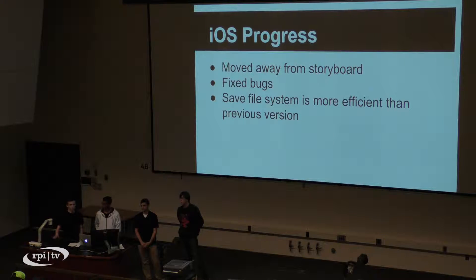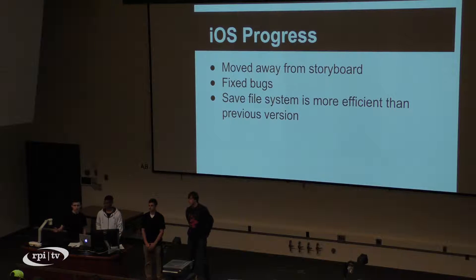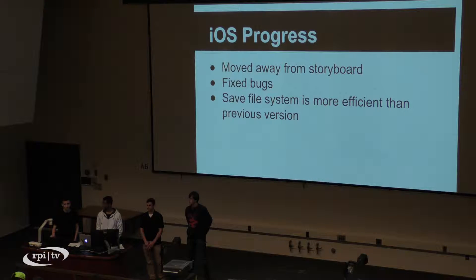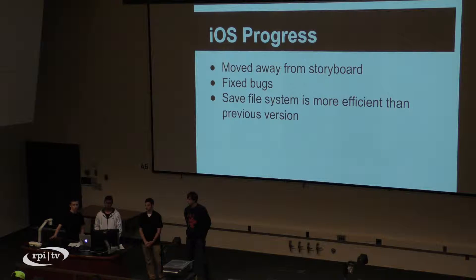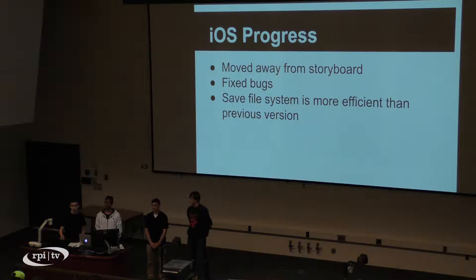We recently moved away from storyboard in the iOS design, which is great. The storyboard kind of causes issues sometimes, so the switch fixed a lot of bugs and things are a lot more efficient as well. We're only using a byte for measurement — you only need 8 bits, which is about 256 miles per hour or kilometers per hour or whatever. If you're going that fast, you're going too fast, so nobody's going to go past that. It allows us to save a lot of space on the device.